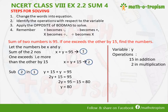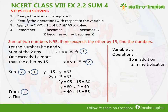Next we take the 2 in 2y to the other side. So y is 80 divided by 2, which is 40. We have got y. Substituting in equation 2, we get x equals y plus 15, that is 40 plus 15, which is 55. Therefore, the two numbers are 40 and 55.